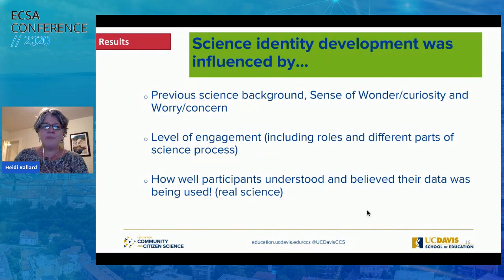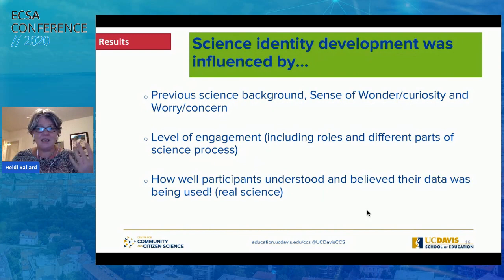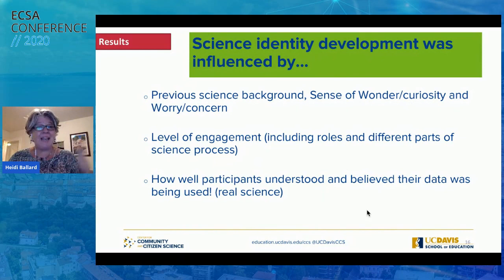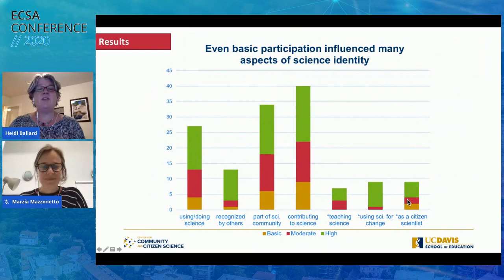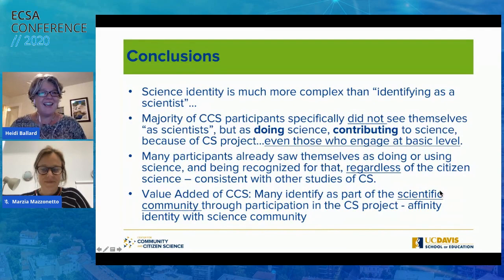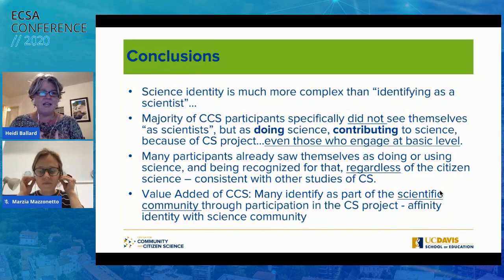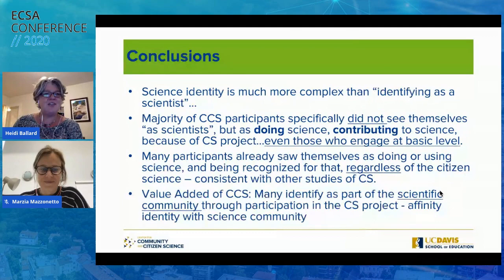Some important things we saw — not going into full detail — is the ways that previous science background certainly influenced whether science identity was developed, and whether people were doing it because they were curious about nature, like in the bird projects, or really worried and concerned, like in the environmental justice projects. People who felt like their data was helping their community very much felt their identity increased. In conclusion, science identity is much more complex than just identifying as a scientist. Many people who do citizen science were already feeling like they identify with science, but the value-added of citizen science participation might be in the sense of feeling part of the scientific community.